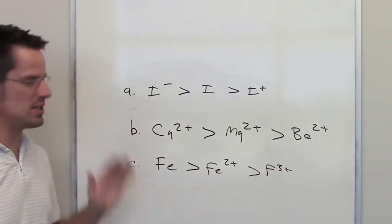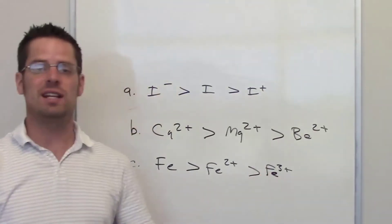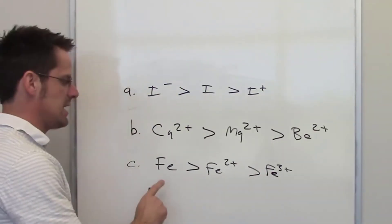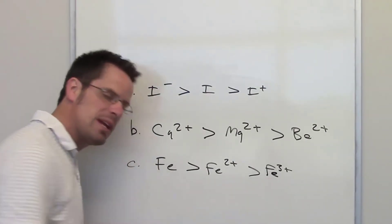Just as we saw in example A, if you're dealing with the same element, the only thing that's happened is I've gone from iron neutral to iron that has lost two electrons to iron that has lost three electrons.